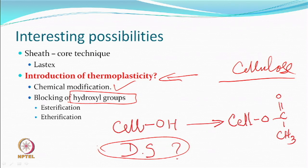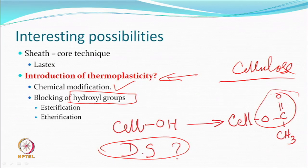If you want the material to respond to heat, you reduce the hydroxyl groups — how much is referred to as the degree of substitution. This can be done by many means; esterification is well known — you have triacetate and diacetate fibres where ester linkages were being introduced. Depending upon the degree of substitution, the glass transition temperature will keep coming down.